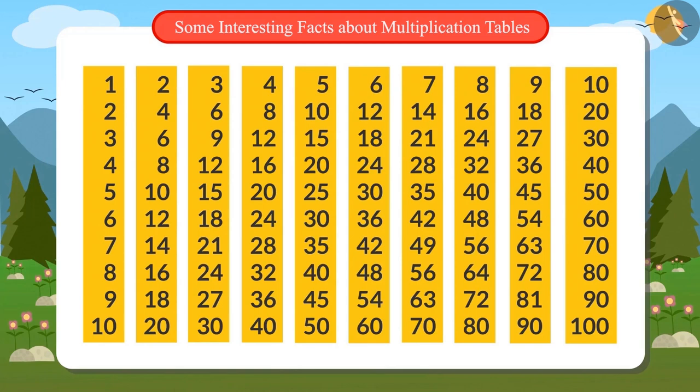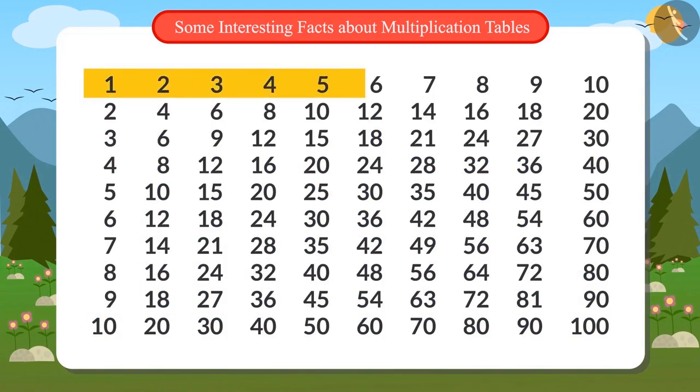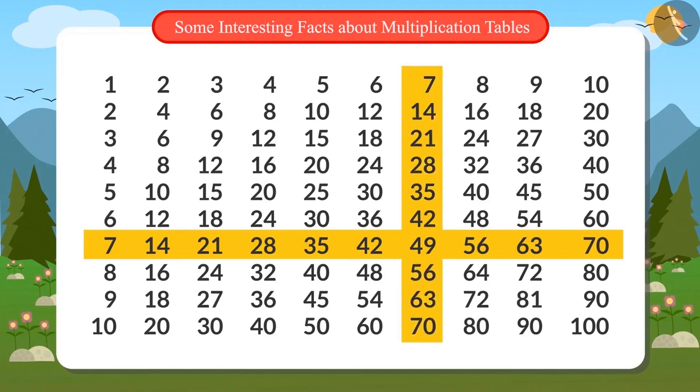Oh yes! This is an amazing pattern! Like the first line from left to right is table for 1. So is the first line from top to bottom. Similarly, the seventh line from left to right is the table of 7. And so is the seventh line from top to bottom.